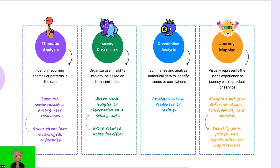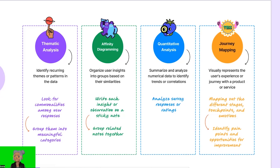Number two, affinity diagramming. This technique involves organizing user insights into groups or clusters based on their similarities. You write each insight or observation on a sticky note, then group related notes together. This helps to visually identify trends and connections among user responses.